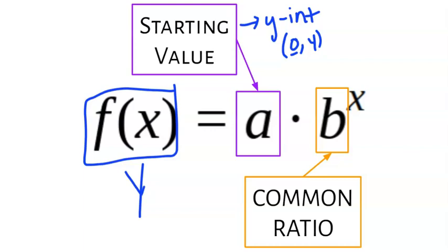And then b is that common ratio. Also, you can see it called multiplier. It's very similar to slope for a linear function, but in this case, it's called the common ratio.